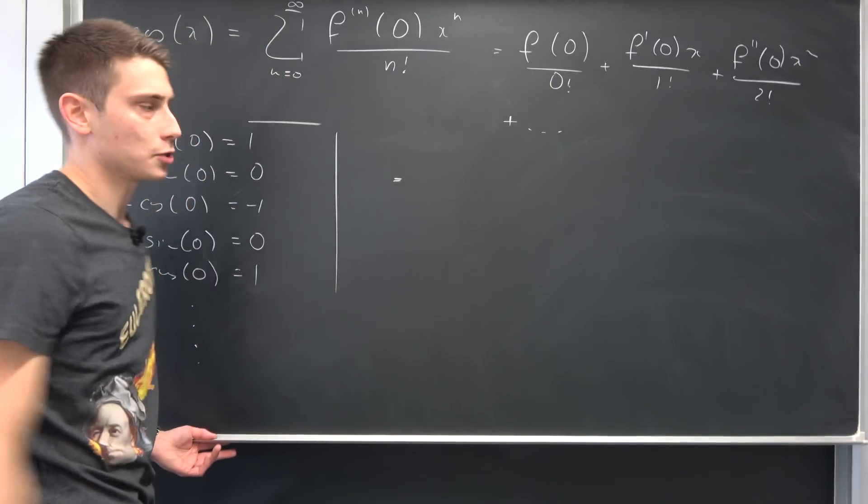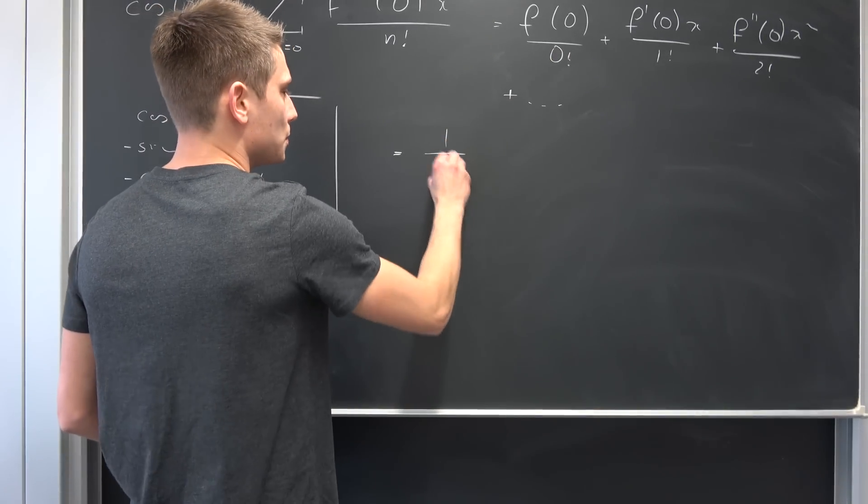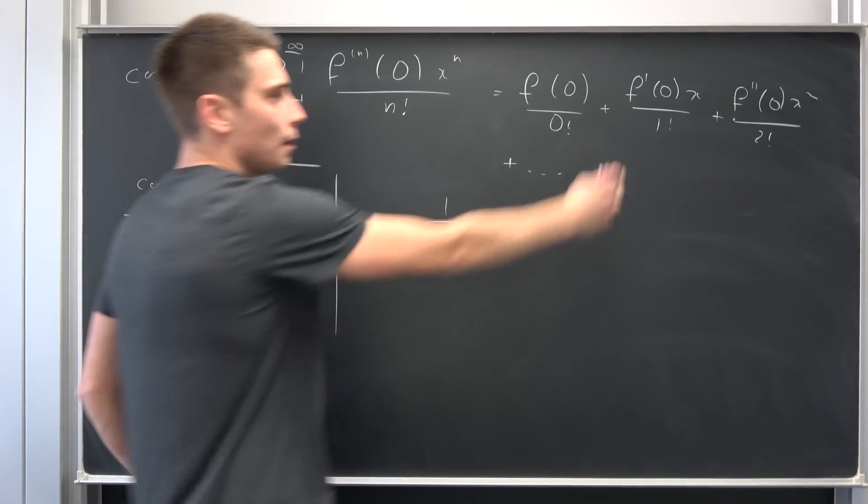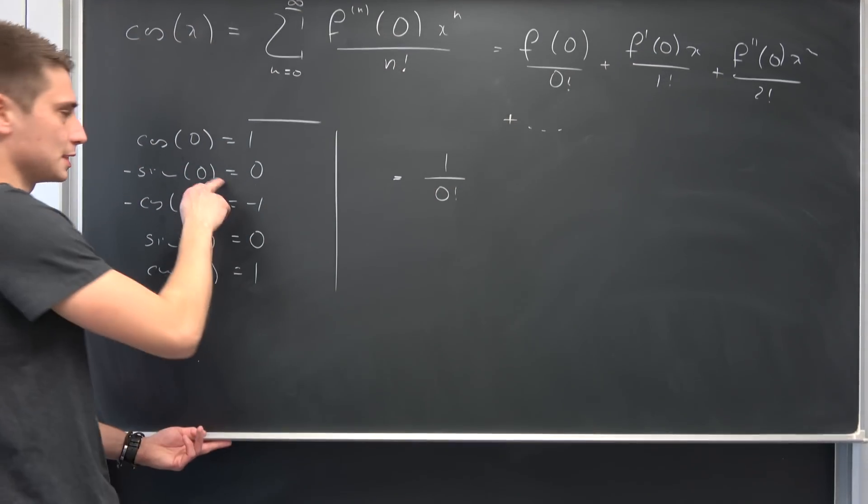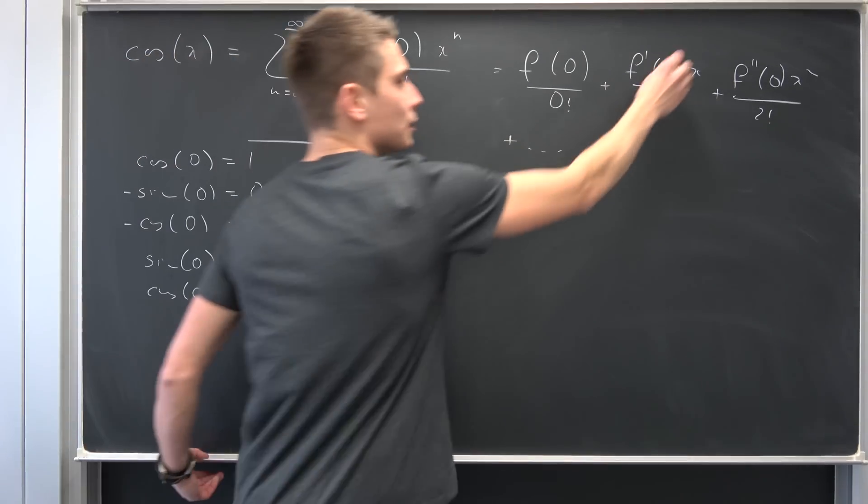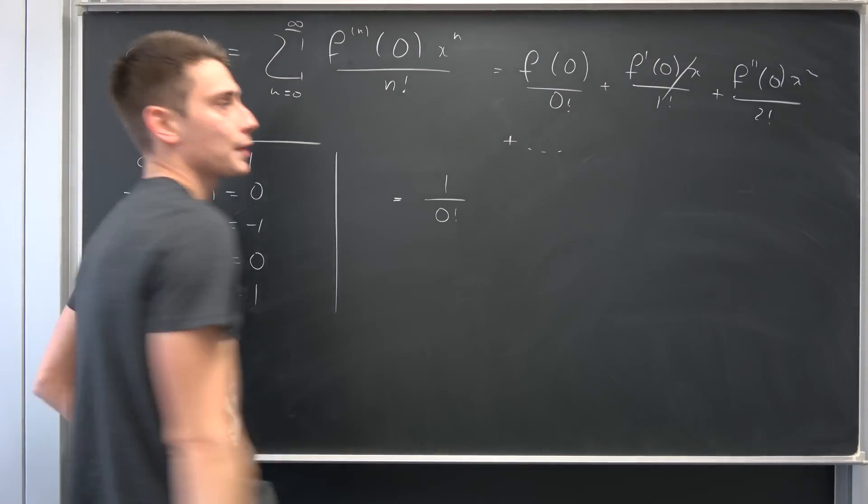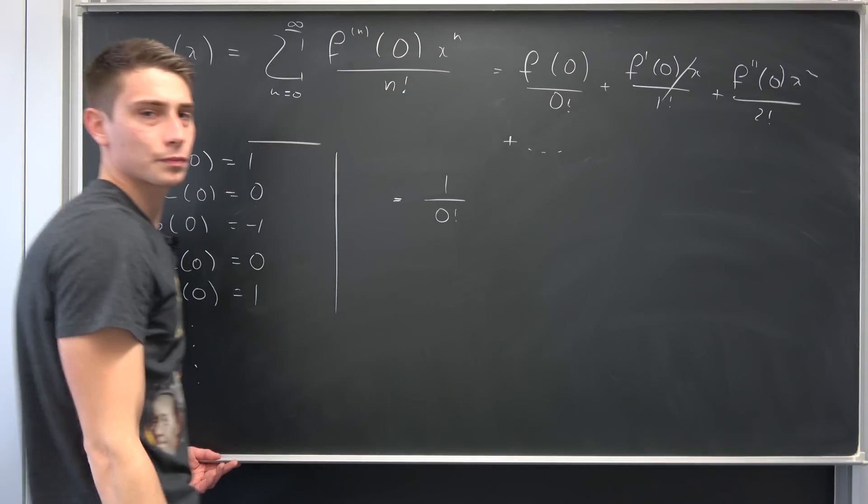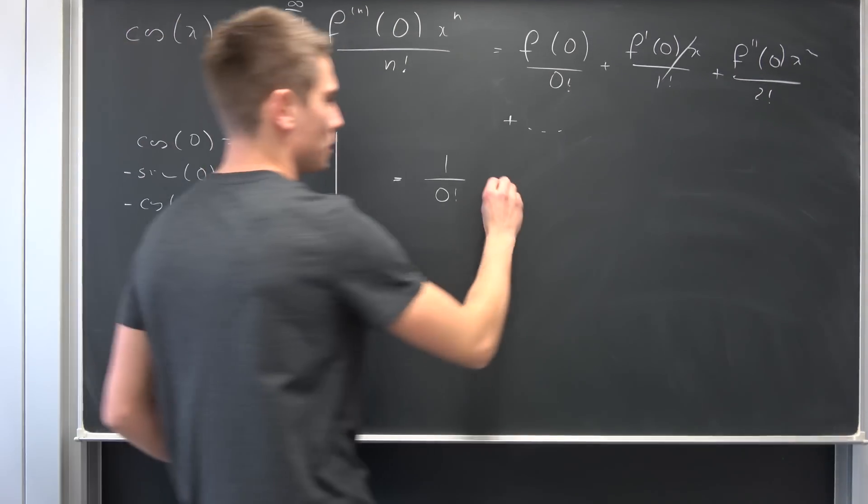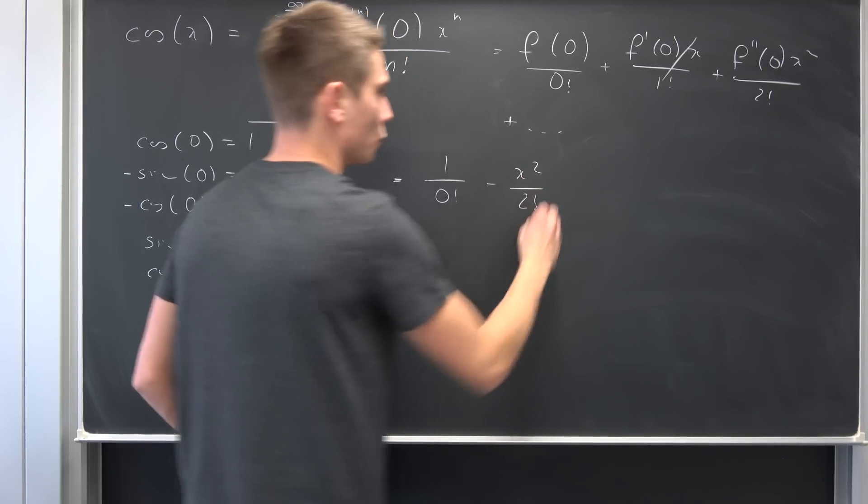f of zero over zero factorial is nothing but one over zero factorial. f prime of zero is nothing but zero. So this term is going to vanish. f double prime of zero, well this is negative one. So we have negative x squared over two factorial.